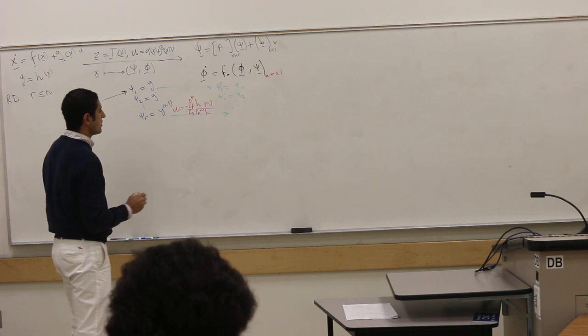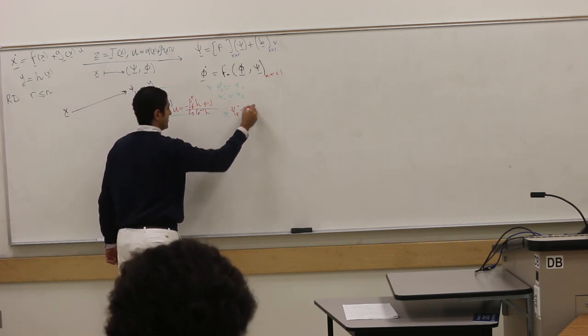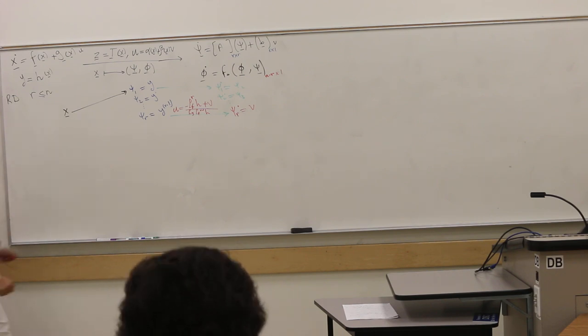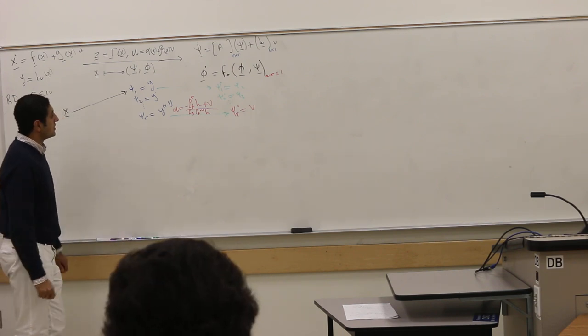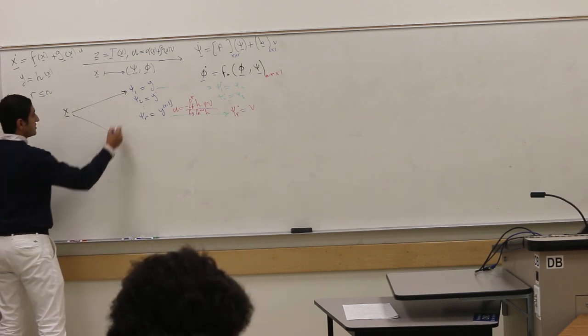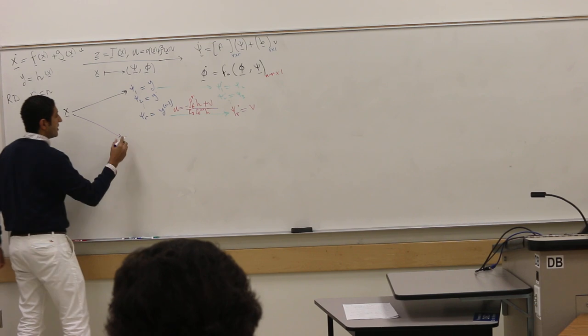Under this control law, ψ_R dot is just V. So the system is purely linear. This is the ψ, the first part of the dynamics.